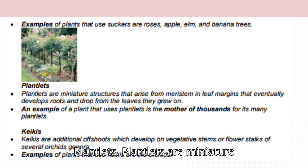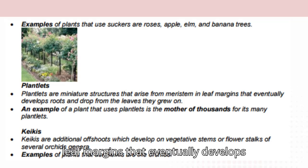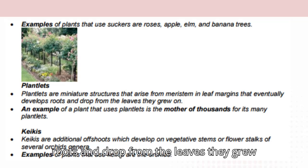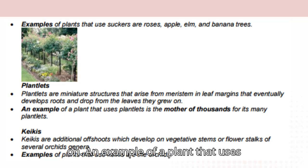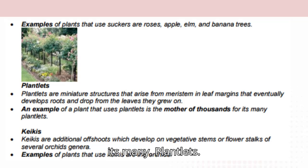Plantlets: plantlets are miniature structures that arise from meristem in leaf margins that eventually develop roots and drop from the leaves they grew on. An example of a plant that uses plantlets is the mother of thousands, known for its many plantlets.